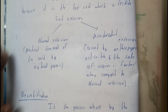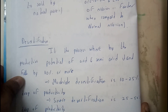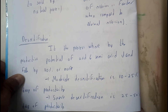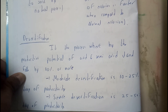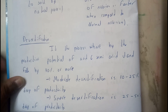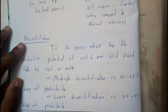Now let's see what is desertification. Desertification is the process whereby the productivity potential of arid and semi-arid area lands falls by 10% or more. I hope you got a small idea on desertification. If desertification is in the range of 10 to 25%, it is called moderate desertification.